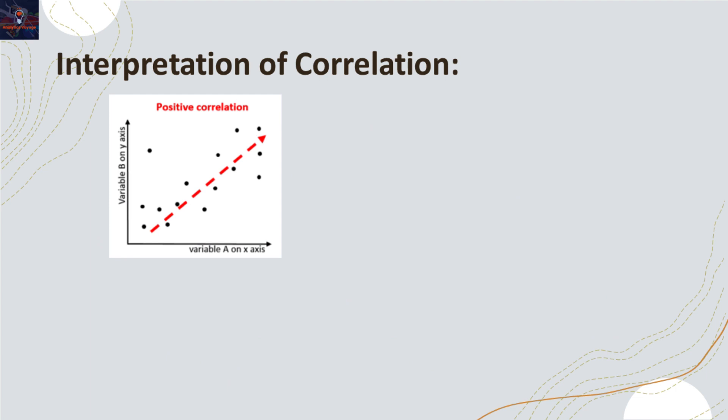Now let's explore some visuals to illustrate correlation. In this chart, we observe a positive correlation between two variables. As discussed, both are moving in the same direction, increasing together.